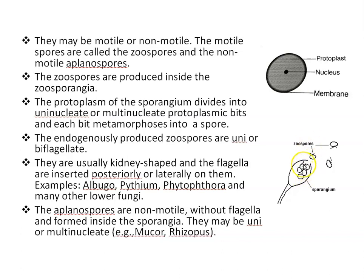Zoospores are produced inside the zoosporangia. The protoplasm of the sporangium divides into uninucleate or multinucleate protoplasmic bits, and then each bit metamorphoses into a spore. Endogenously produced zoospores may be uni- or biflagellate; they are kidney-shaped and flagella are inserted posteriorly or laterally on them. Zoospores are commonly found in Albugo, Pythium, Phytophthora, etc. Aplanospores — non-motile spores — are commonly found in Mucor and Rhizopus.